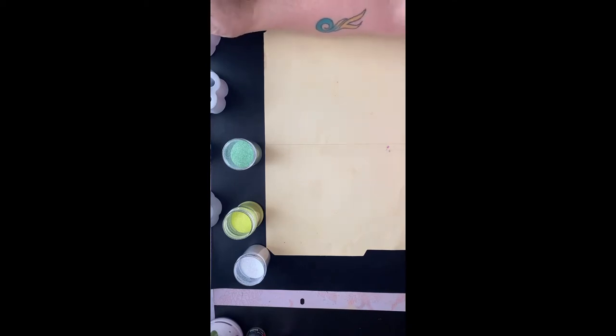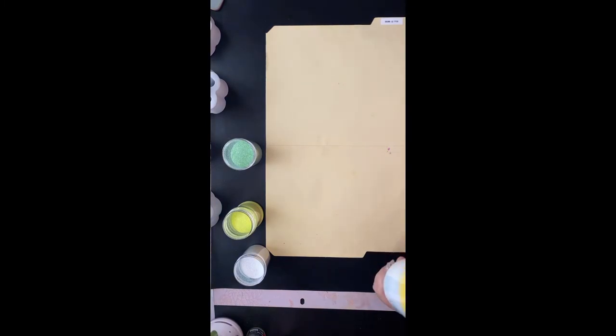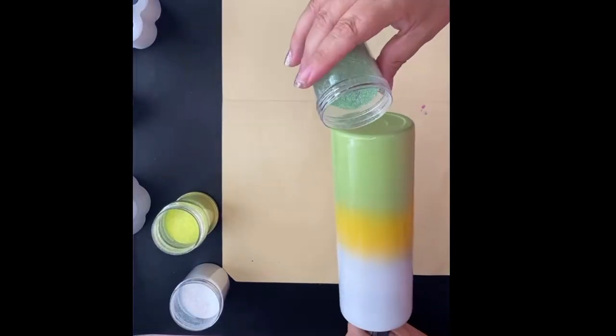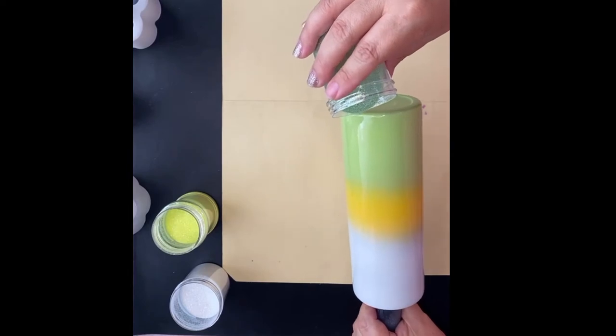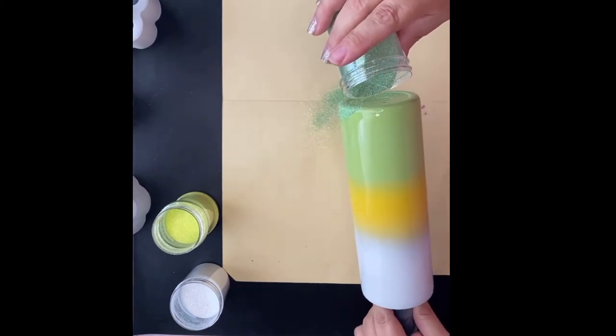I like to start with my darker color or my bottom color first, so I'm going to start with this green. I like to start with my darker color because if I get some in an area that I don't want it to be, I can easily take it off prior to starting with any other color.